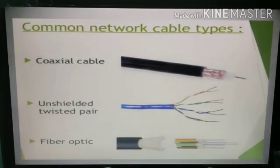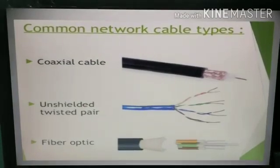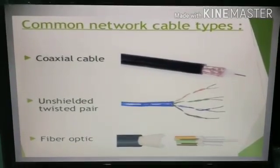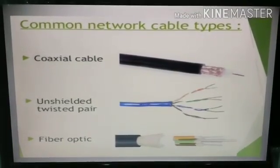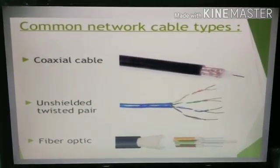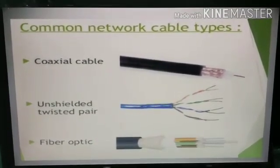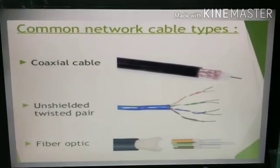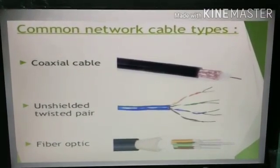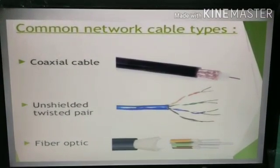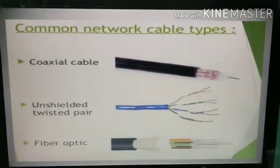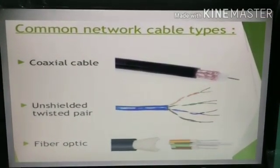It has a pair of conductors separated by insulation. Due to the better shielding it supports longer distance and better speeds than twisted pair cable. It is used for cable TV, telephone line, and local area network.